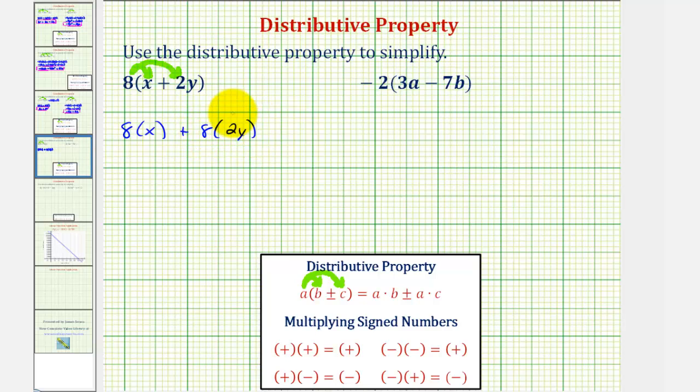Now we'll find the products. 8 times x would be 8x plus 8 times 2y, that would be 16y. These are not like terms. This is an x term and this is a y term. Therefore, we cannot combine the terms.